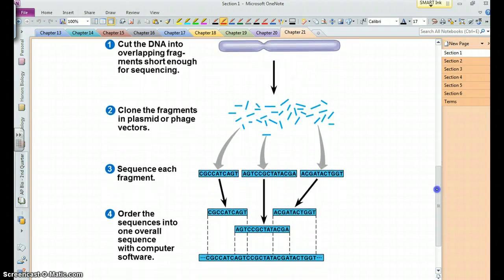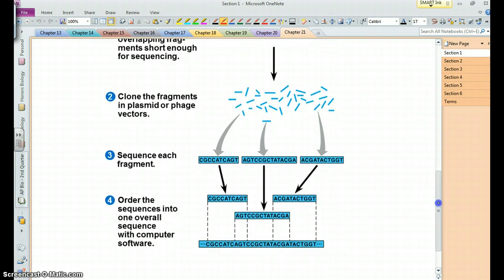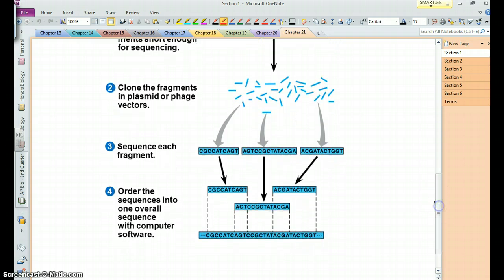And you take those separate pieces, and as we talked about in the previous chapter, you can clone them using bacteria or sometimes viruses, and you can make copies of them. And that gives you lots of material that then you can sequence those different pieces and those different clones.